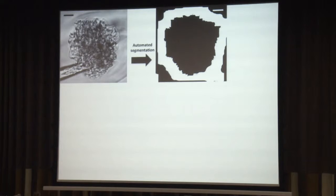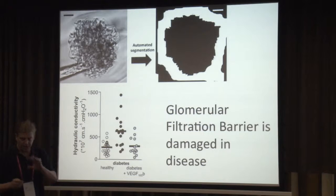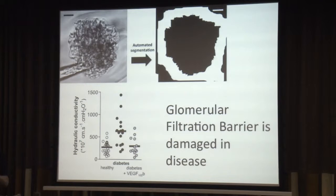What we find is that if we take some healthy glomeruli — these were done in rats or mice, we've done it in both — healthy ones have certain genetics where this is increased. And then if we have a drug that recovers it, it comes back down again. So something is causing this change of permeability in disease.